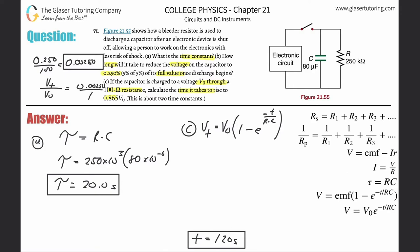They're saying the voltage at some point in time will equal 0.865 of its initial. So I'm going to substitute this value in for V sub T. That's equal to VO times one minus E to the negative T over RC. The VOs will cancel. So now I'm left with 0.865 equals one minus E to the negative T over RC.